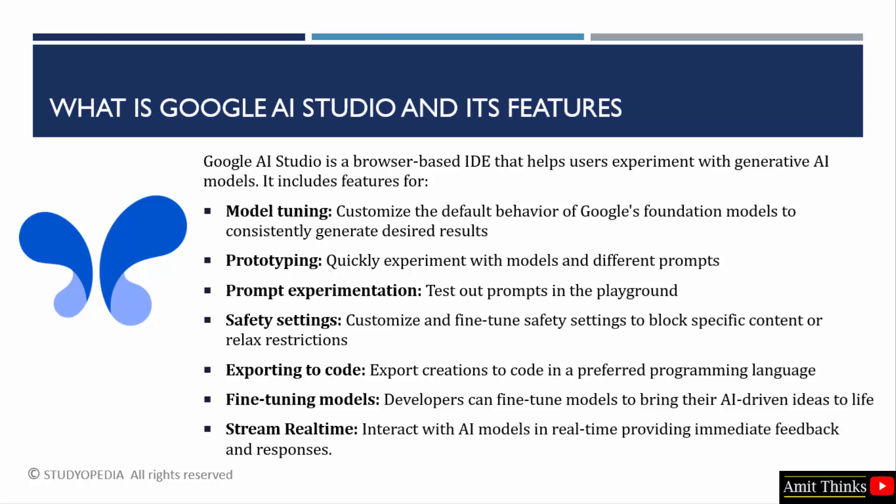You can also set safety settings so that you can block specific content. Developers can also fine-tune models. Whatever you create on Google AI Studio, you can easily get the code for it. With the real-time streaming feature in Google AI Studio, you can interact with AI models in real-time, providing immediate feedback and responses.